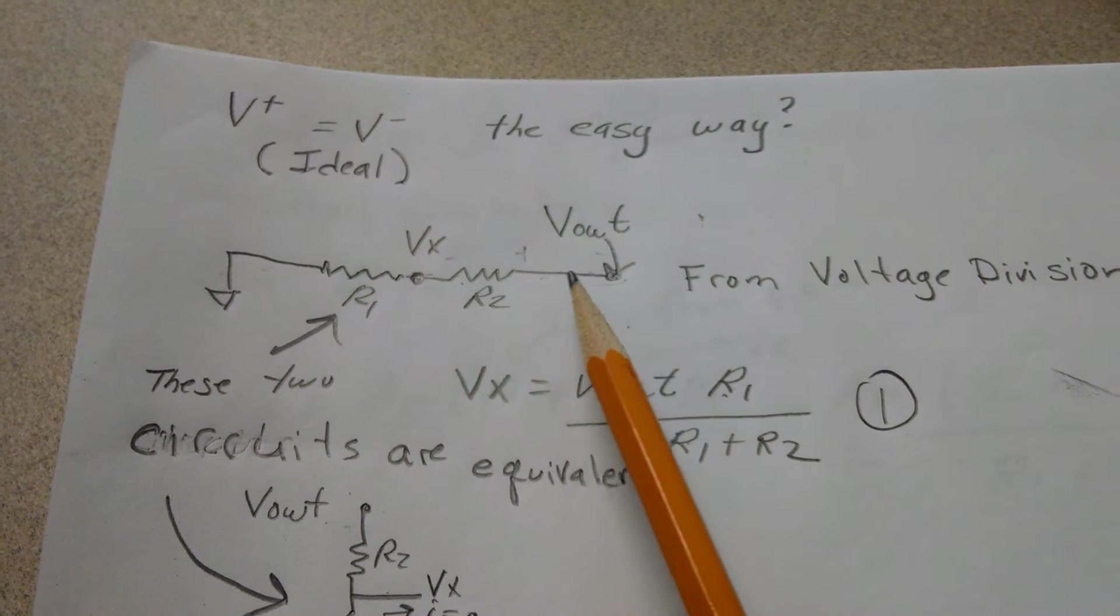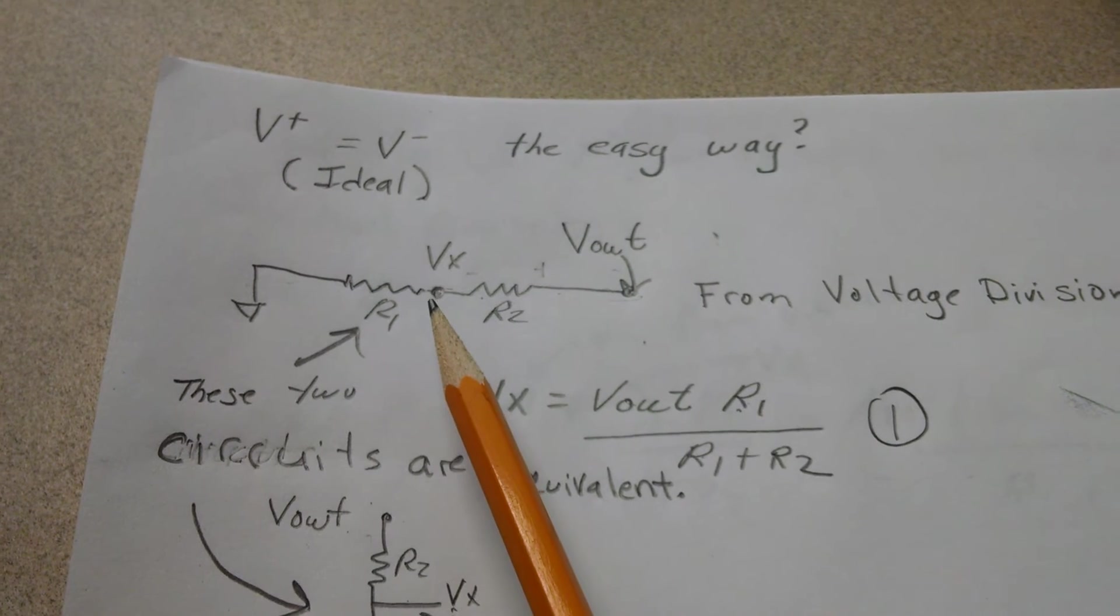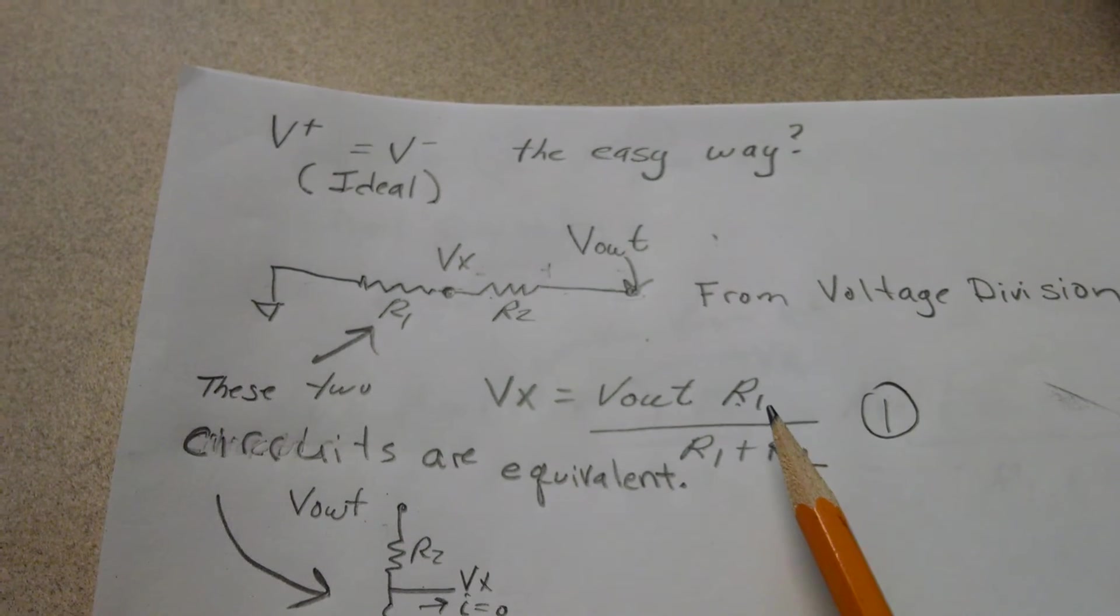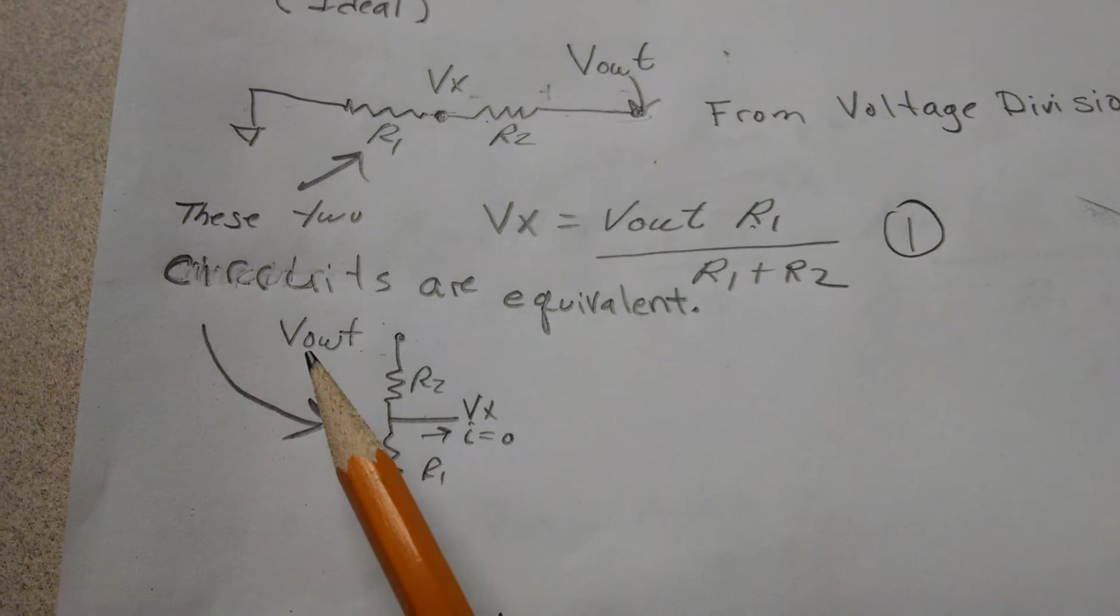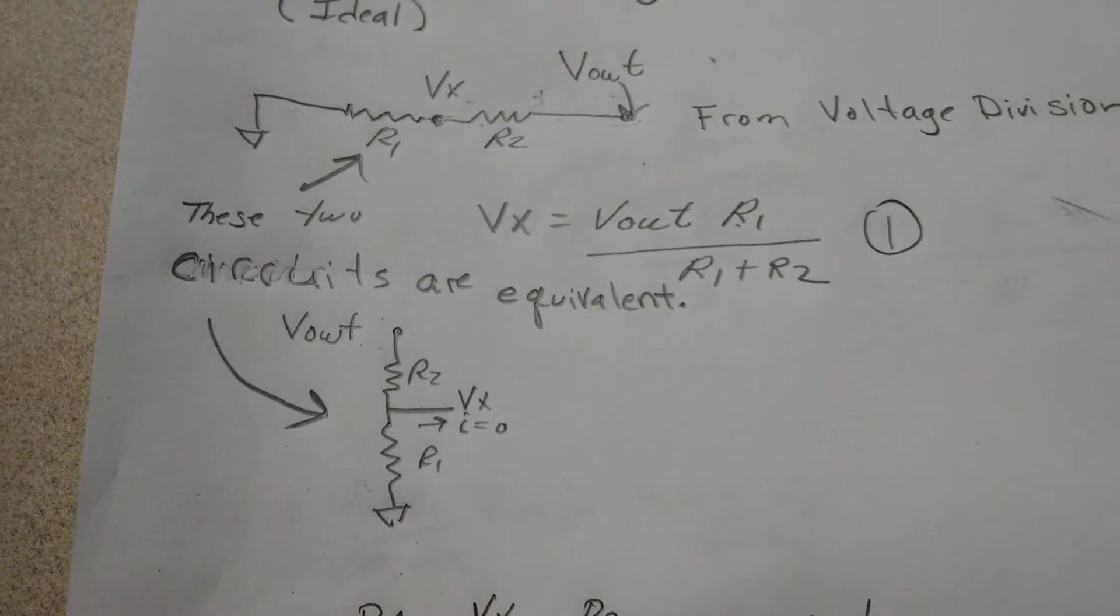If we look at this, I just have Vout, R2, and R1. They're in series. I can calculate Vx with voltage division. And if that's a little bit confusing, I can just redraw it: Vout, R2, R1, voltage division.